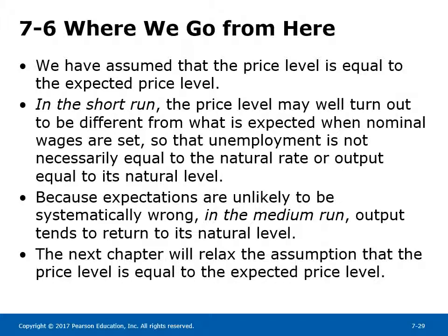In section 7-6, where we go from here: we have assumed that the price level is equal to the expected price level. In the short run, the price level may turn out to be different from what is expected when nominal wages are set, so unemployment is not necessarily equal to the natural rate or output equal to its natural level. Because expectations are unlikely to be systematically wrong, in the medium run, output tends to return to its natural level. The next chapter will relax the assumption that the price level equals the expected price level.